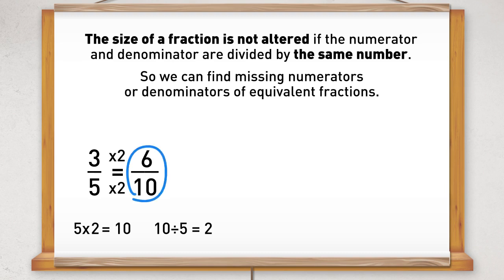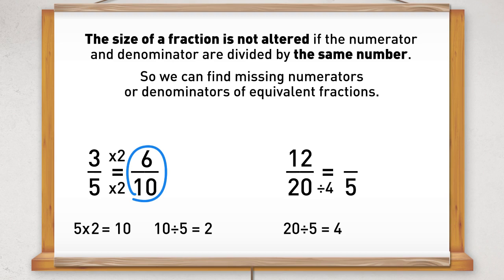Another example: if I start with twelve-twentieths and I want my answer in fifths, I need to work out what I have divided the twenty by to get five. Since twenty divided by four gives me five, and since I've divided the denominator by four, I must divide the numerator by four to get an equivalent fraction. Twelve divided by four equals three, so the equivalent fraction is three-fifths.